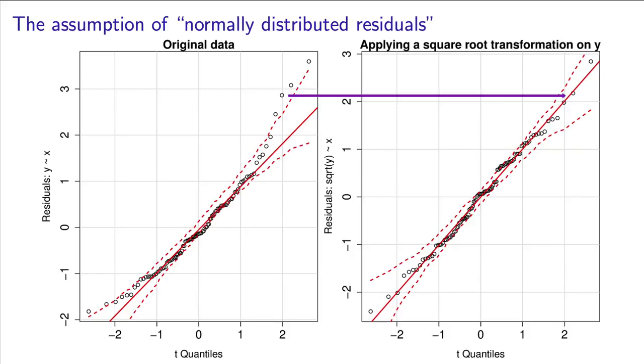These transformations, such as taking a square root or a log of the y-value, are often done to satisfy another assumption, that our model correctly matches what we expect from theory, and I will talk about that in the next video. But here in this example, we see evidence in the residuals, in the QQ plot, that applying a transformation has made the residuals more normally distributed.